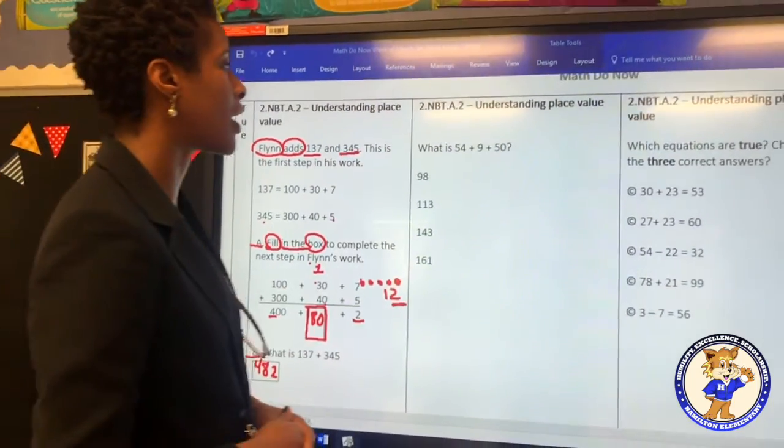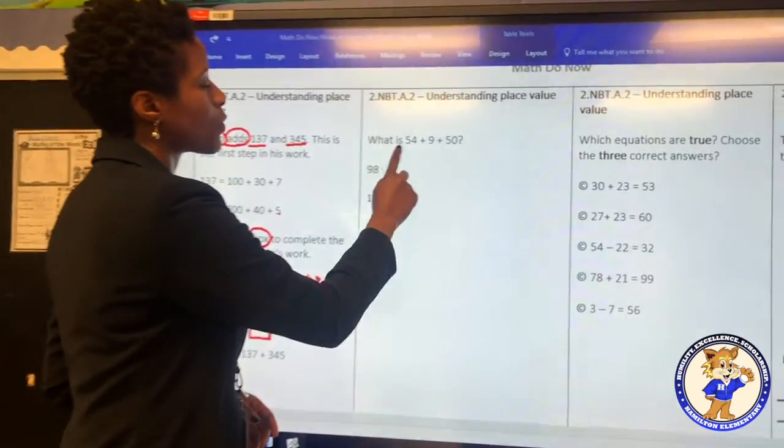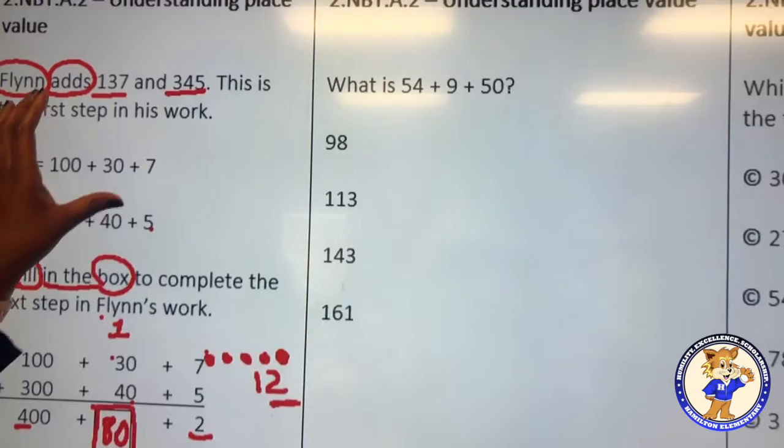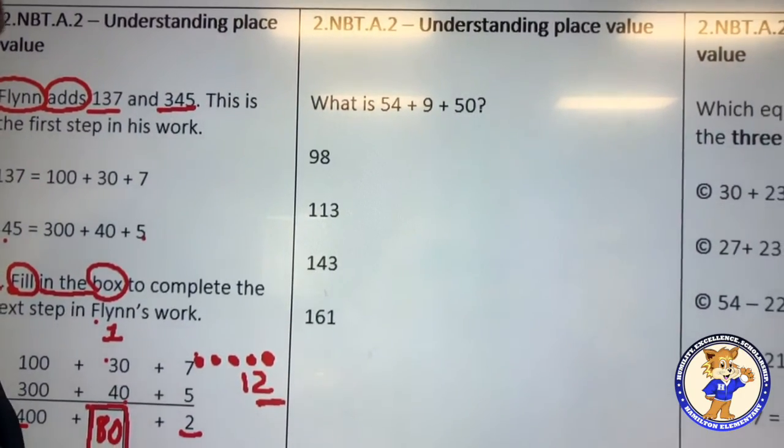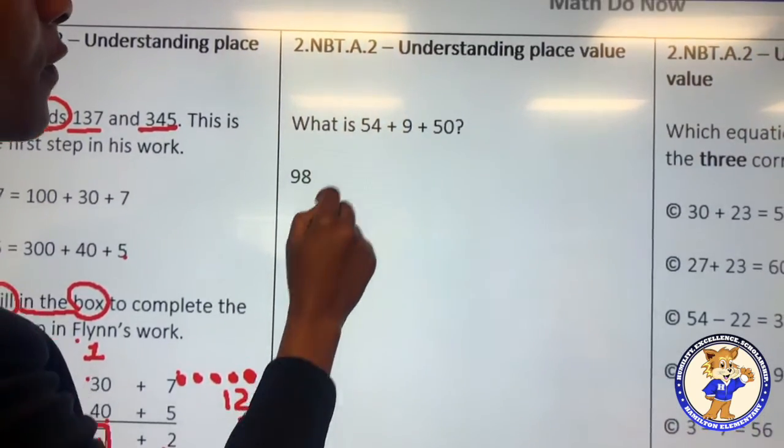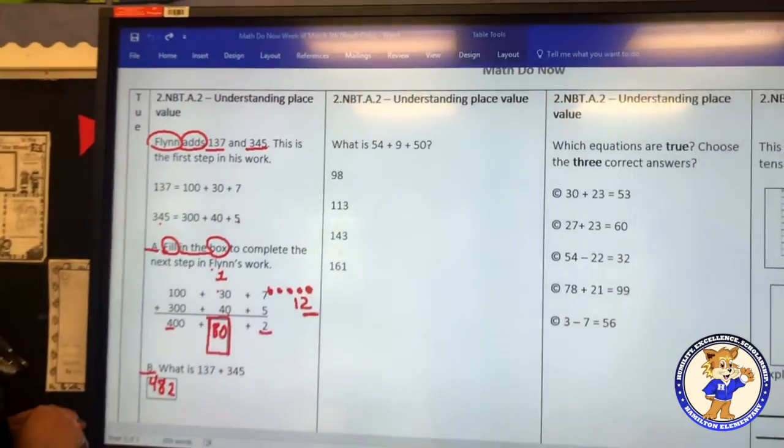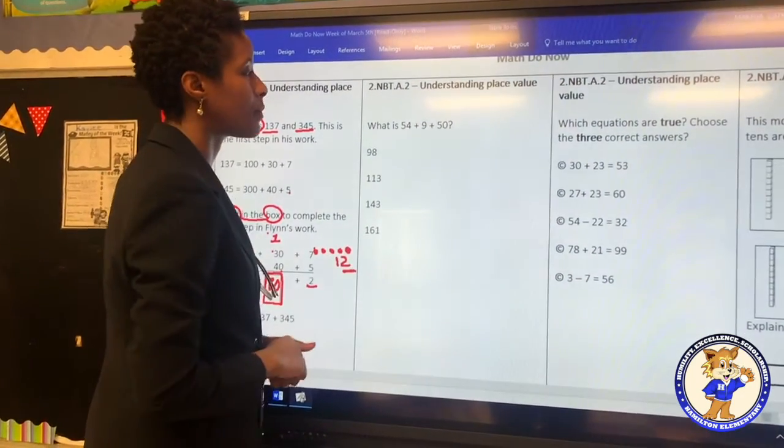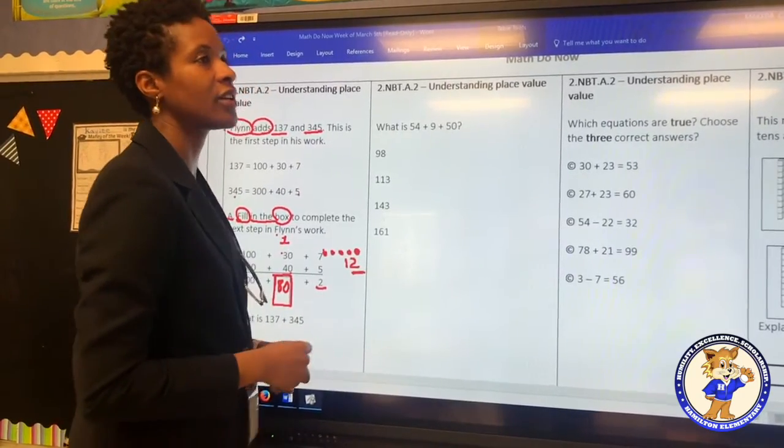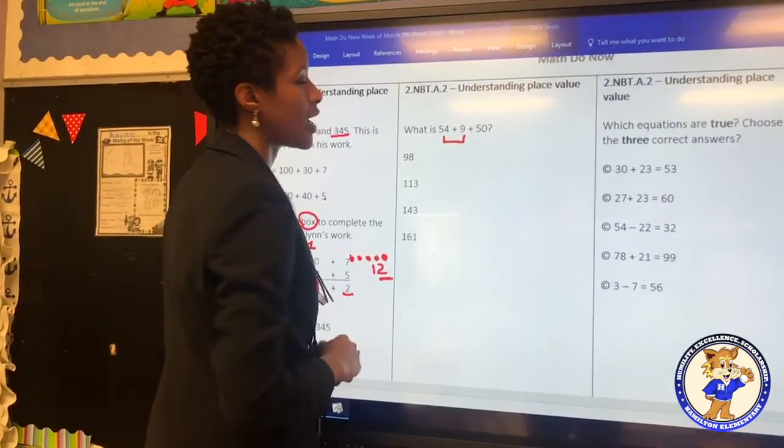I'll do one more example, and this is also under the same standard. However, this one is asking us to solve the problem, but without any extra notes or annotations. But, we can also make our own. It says, what is 54 plus 9 plus 50? Well, on this problem, we have 3 different numbers that we're adding. And, the best strategy that we can use is to take the first 2 numbers and add them.